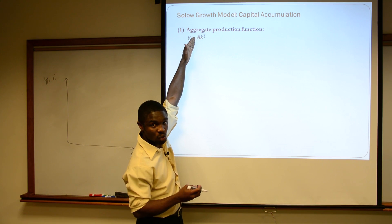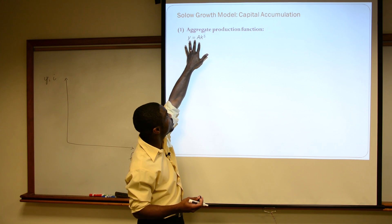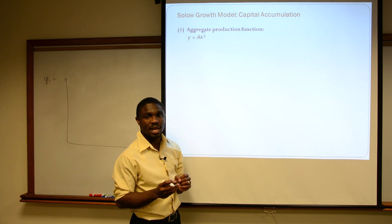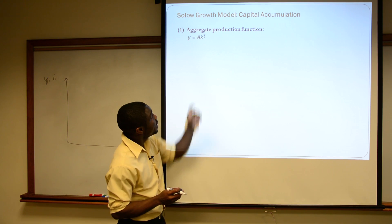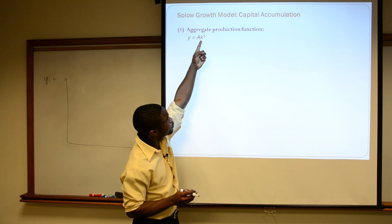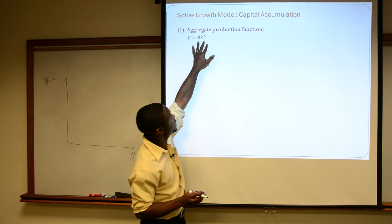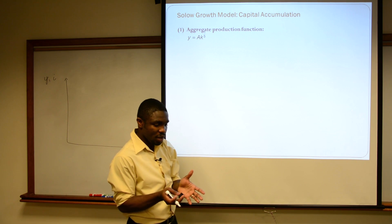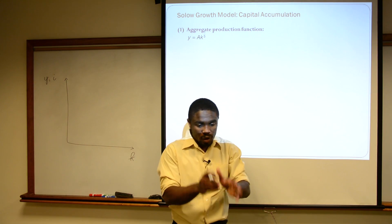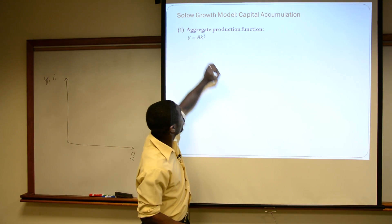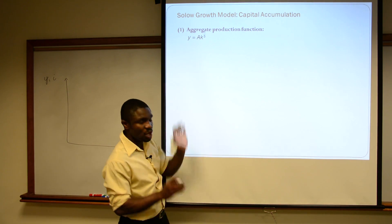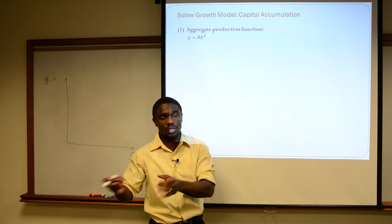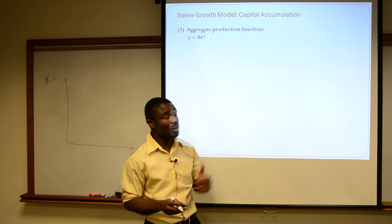...A, which is our total factor productivity — you can think of that as the technology index in this economy — times K, our per person capital, raised to one third. The one third here, you can think of it as one third of the income created in this economy going to the owners of capital, and two thirds going to labor.